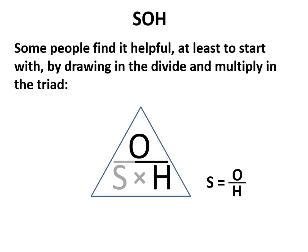This makes no difference for CAH or TOA — it works the same way. We cover the one we don't want, and the relationship left over is what we use.